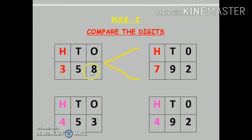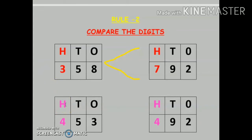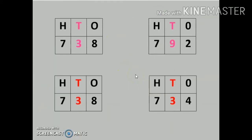See the next numbers: 453 and 492. First rule — count the number of digits: 1, 2, 3 — three digits each. The number of digits are the same. Now rule number 2 says compare the position of digits. Compare the hundreds position: here the number is 4, and here also the number is 4. The hundreds digits are the same.